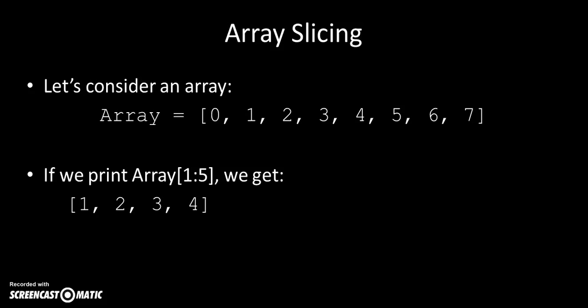If I do array from 1 to 5, 1 colon 5, what that means is print out the second, third, fourth, and fifth element of the array. So from array element number 1, which is we know the second element, and stopping, getting to the fifth element, and stopping there.